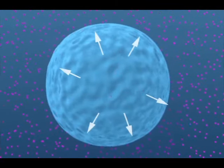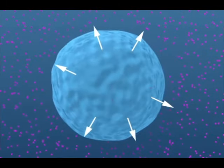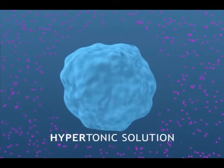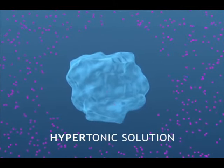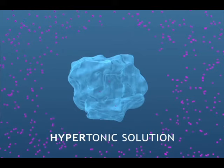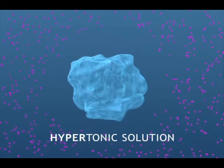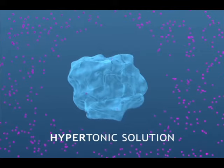One, water moves out, causing the cell to shrink. A solution which is added to cells that causes this is called a hypertonic solution. The fluid outside the cell has a lower concentration of free water molecules than the fluid inside the cell, so water diffuses out of the cell.